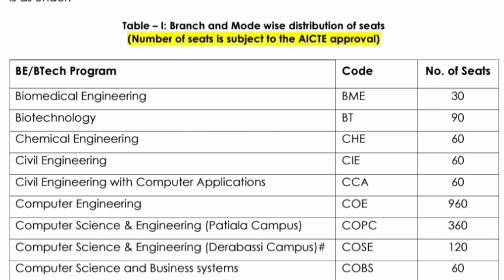Now let me come to the main topic: the cutoff seats. First, we should know the total number of seats available this year. This is the 2024-25 seat matrix. You can see the branch and branch code, which is very important. Biomedical Engineering: 30 seats. Biotechnology: 90 seats. Chemical Engineering (CHE): 60 seats. Civil Engineering (CIE): 60 seats. Civil Engineering with Computer Application: 60 seats. Computer Engineering (COE): 960 seats — the highest. Computer Science Engineering in Patiala campus (COPC): 366 seats. Computer Science Engineering in Derabassi campus (COSE): 120 seats. Computer Science and Business Systems (COBS): 60 seats.